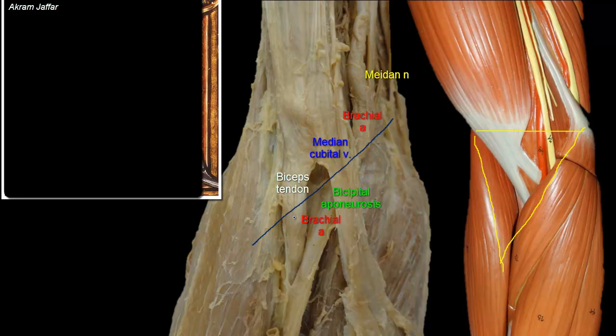In the old days, barber surgeons performing the operation of bleeding or phlebotomy were aware of the importance of the bicipital aponeurosis in protecting the brachial artery from their knives. And so they termed the aponeurosis 'grasa du fascia,' which means 'praise to God.'